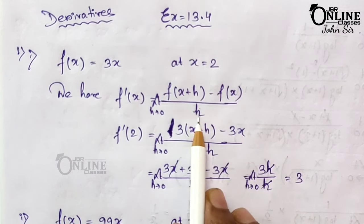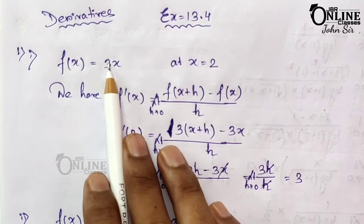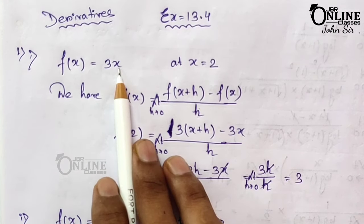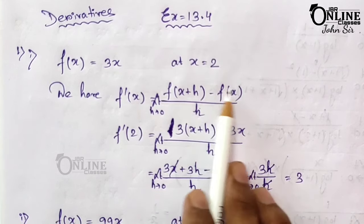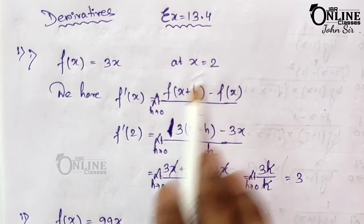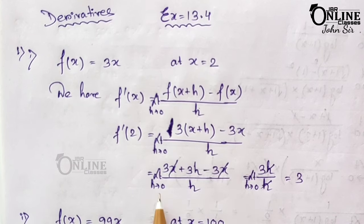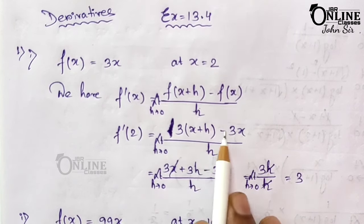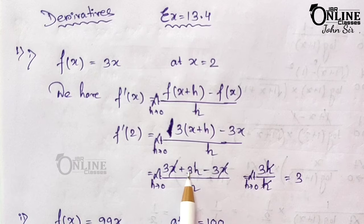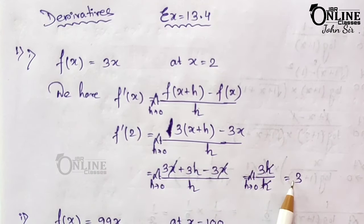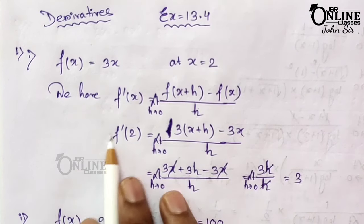So f'(x) = limit h→0 of [f(x+h) - f(x)] / h. Now x+h means instead of x write x+h, so 3(x+h) minus f(x) = 3x, divided by h. That gives limit h→0 of [3x + 3h - 3x] / h = 3h/h = 3. As there is no x remaining, 3 is the final result of f'(2).